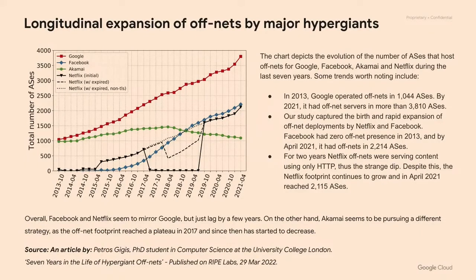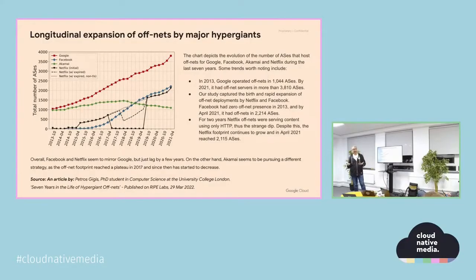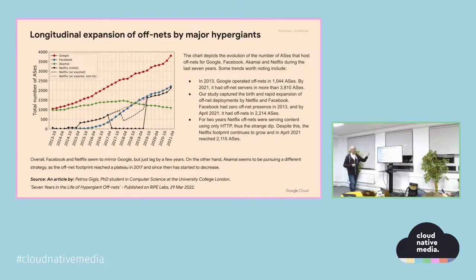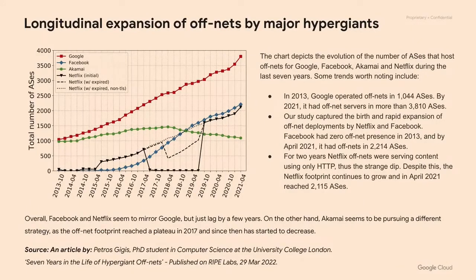Many know that Netflix has a significant off-net network with their Open Connect strategy — they do peering and ship you a box with loads of discs, an off-net cache that refreshes overnight. Sandvine in North America quoted that 30-40% of downstream US traffic in an evening was Netflix traffic, achieved through the growth of their off-net cache. Interestingly, Facebook also has a massive off-net cache — things like Instagram, WhatsApp media all delivered that way.